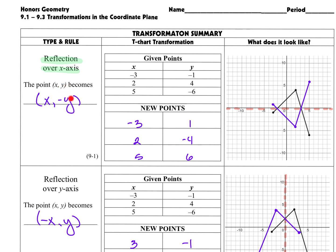The y value is going to change sign — if it was positive it'll become negative, if it was negative it'll become positive. These are all of my given ordered pairs: negative 3, 1 corresponds with this point; 2, 4 corresponds with this point; and 5, negative 6 corresponds with this point. I took the original point negative 3, 1, followed my rule, and got the new point negative 3, negative 1. My point 2, 4 became the point 2, negative 4, and I plotted that point.